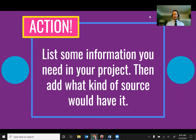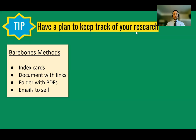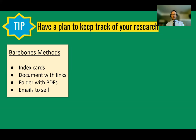The next thing we're going to cover is tracking your sources, and there are a lot of ways to track your research. Sometimes you're taught in K–12 to make index cards — three-by-five or four-by-six cards — write the basic information and take notes on the back. A lot of students will make a Word doc or Google doc and just put sources they find in a list, often with just the links. Some people will download a PDF and put it in a folder, or email sources to themselves. These are all bare-bones methods for tracking your research.